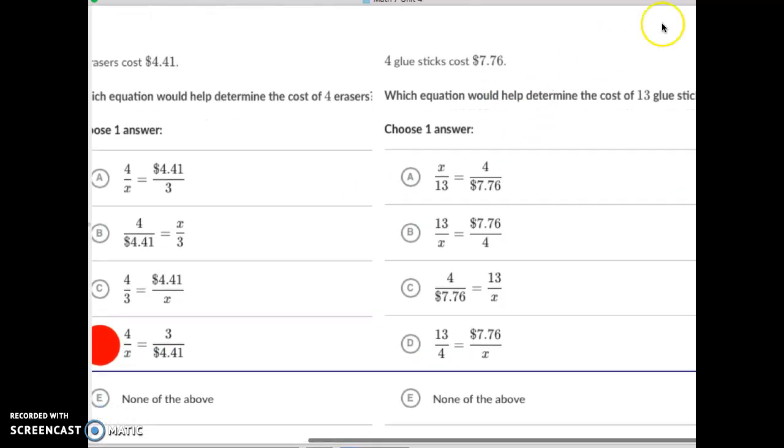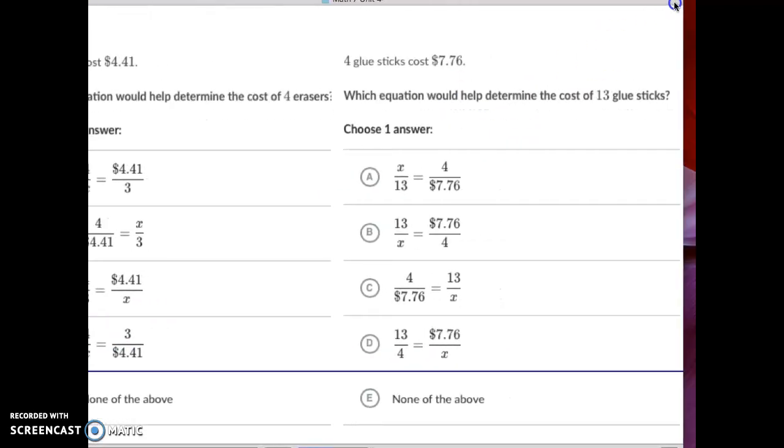Okay, we'll slide this all the way over. We'll slide the screen in there too. Boom. Here's our last one. 4 glue sticks cost $7.76. Which equation helps find 13 glue sticks? Again, 4 is our key. So 4 and X should be in opposite corners.